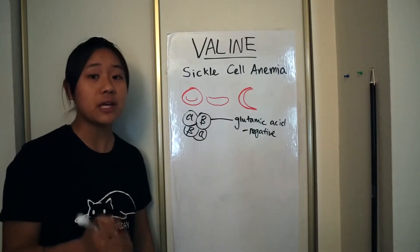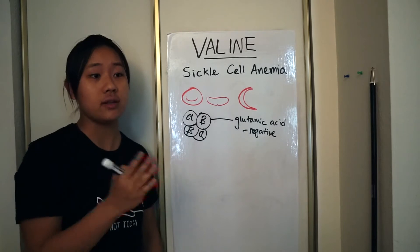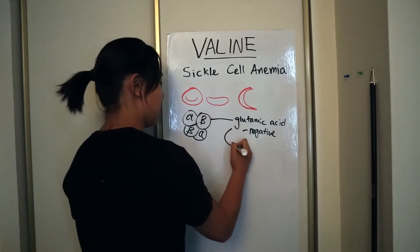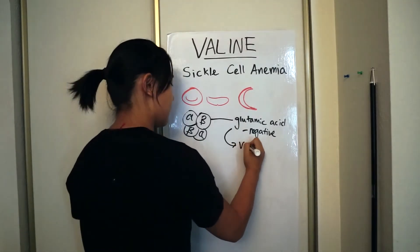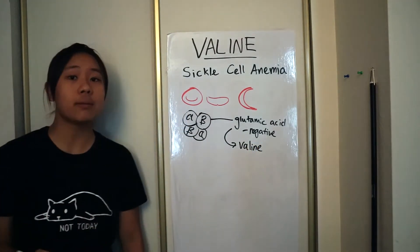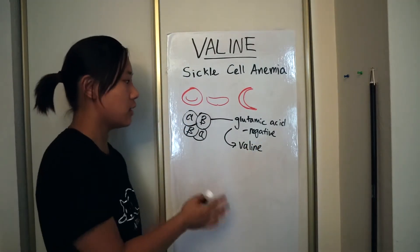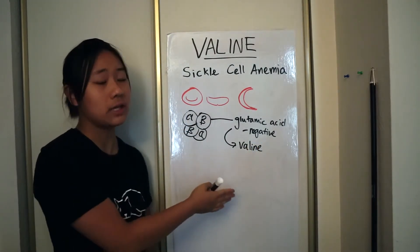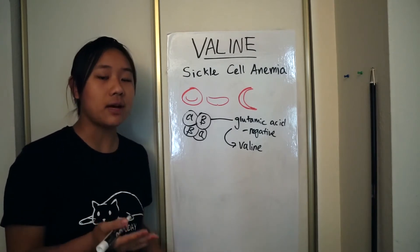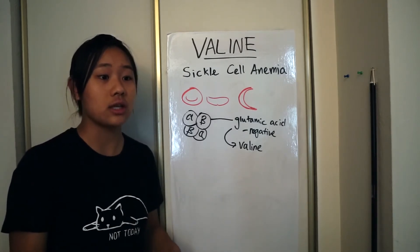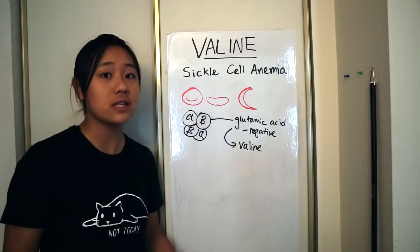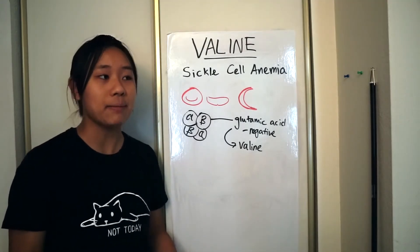But in sickle cell anemia, a single base change, which causes an amino acid change, causes the glutamic acid to become valine. This screws up all the protein folding because valine is nonpolar, unlike glutamic acid. If glutamic acid is negative, it could attract other positively charged amino acids and cause protein folding. However, if it's nonpolar, these interactions can't happen.